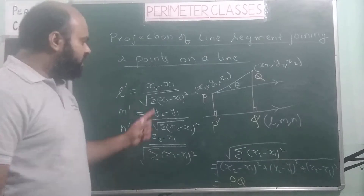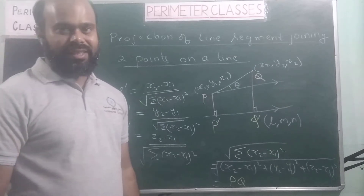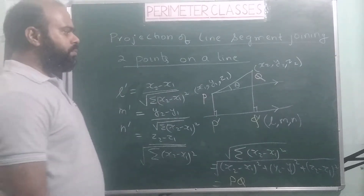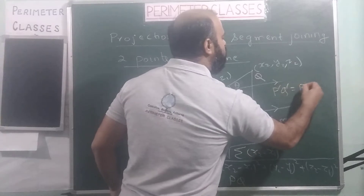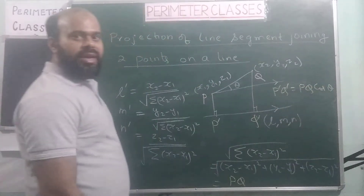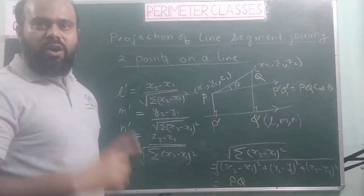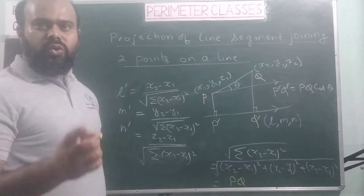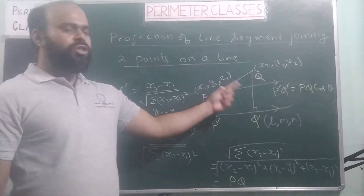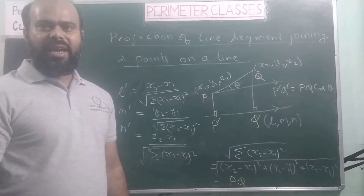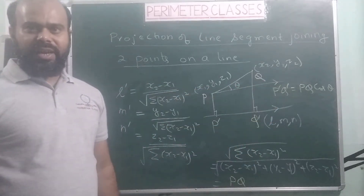The denominator in each of those expressions is nothing but the length of line segment PQ. Now, if we talk about the projection P'Q', then P'Q' is actually PQ·cosθ. In lecture number 2 we studied direction cosines and the way of finding the angle between two lines whose direction cosines are given. So if these two lines have direction cosines L, M, N and L', M', N', then we can get cosθ from lecture number 2.